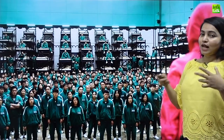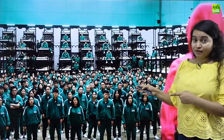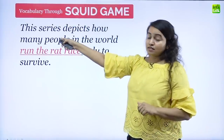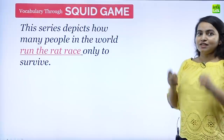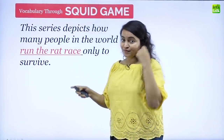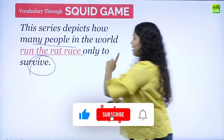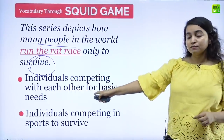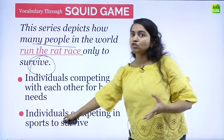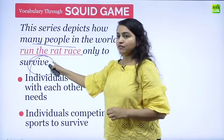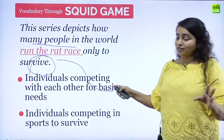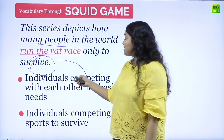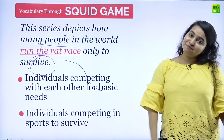Another picture shows many people gathered — all the players competing and fighting with each other. The sentence is: this series depicts how many people in the world run the rat race only to survive. Look at the clue words: they're trying to survive, and there are many people trying to survive. Survive refers to basic needs, not luxuries. When I say I am running the rat race, it means I am doing everything to get food, clothing, and shelter — competing with so many other people only for survival.